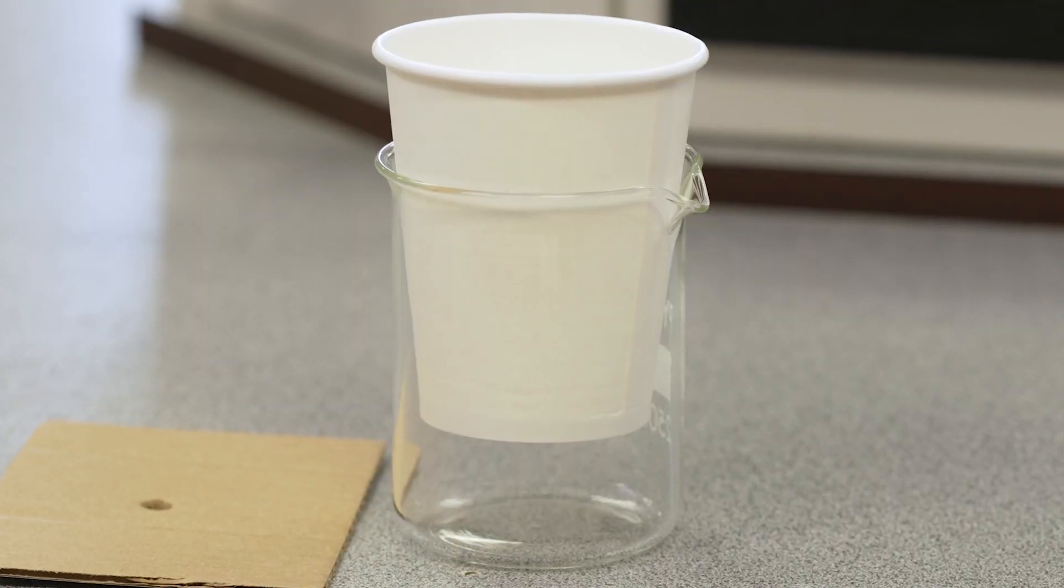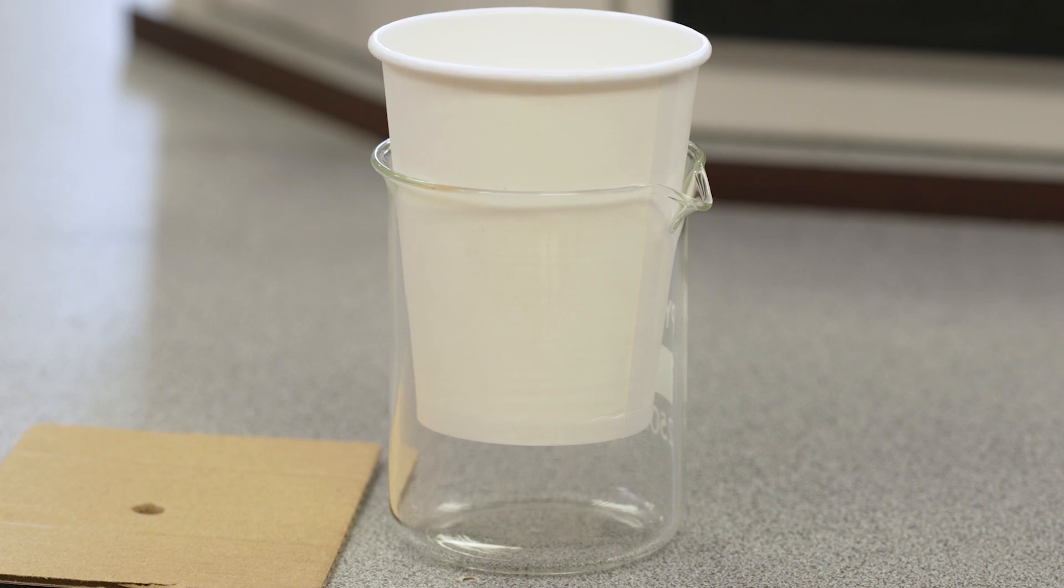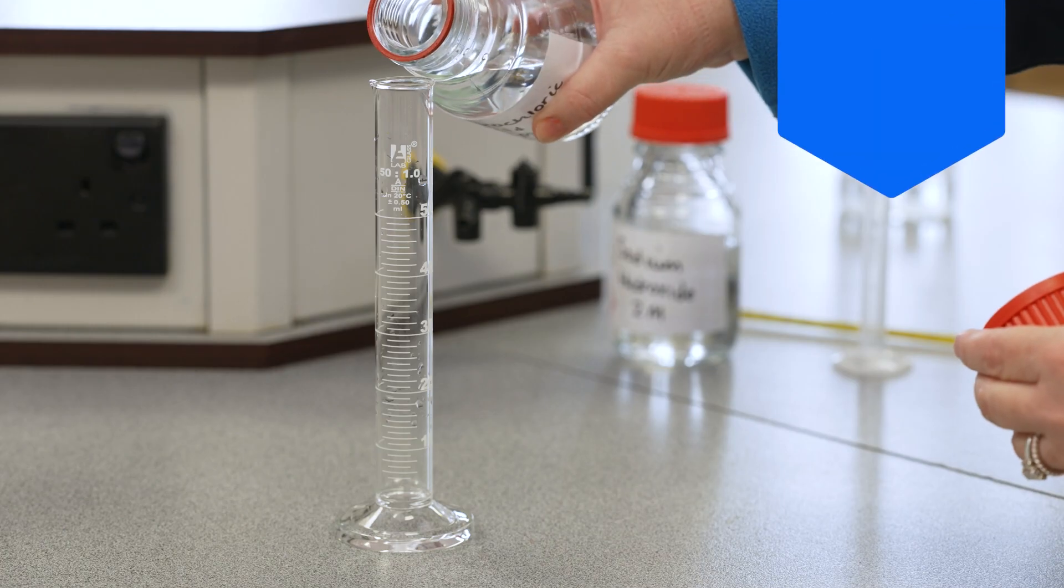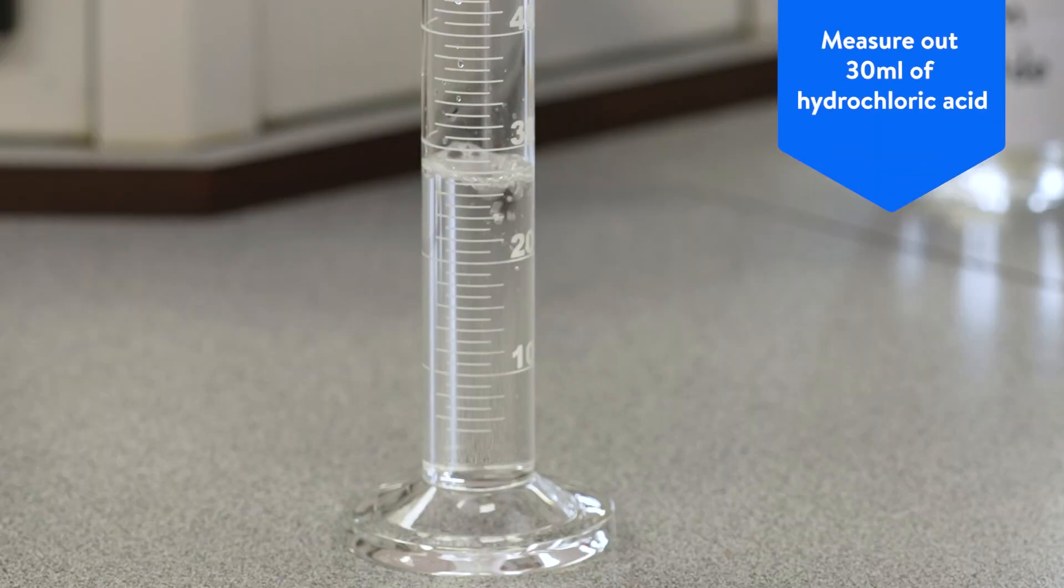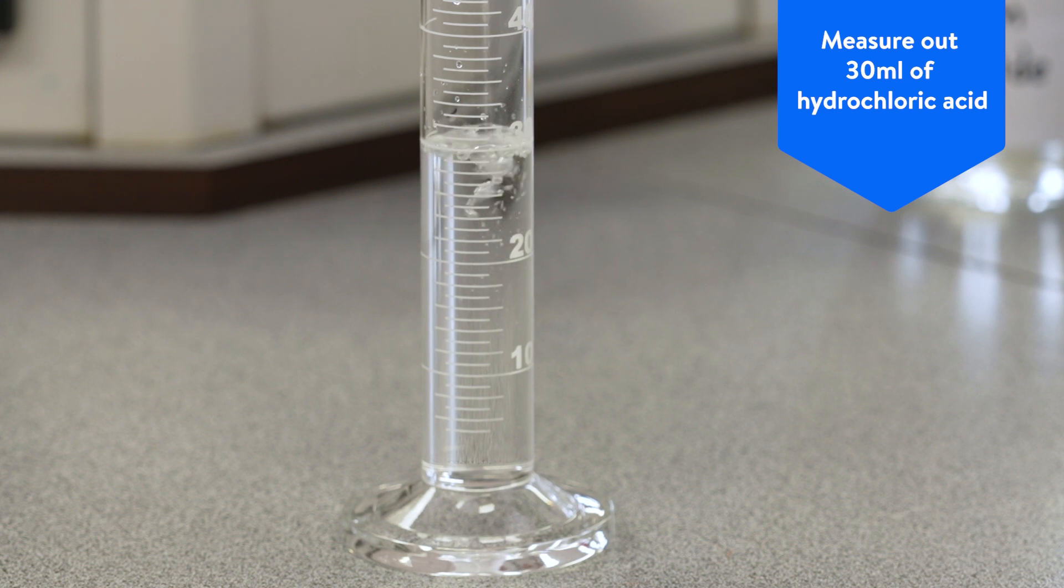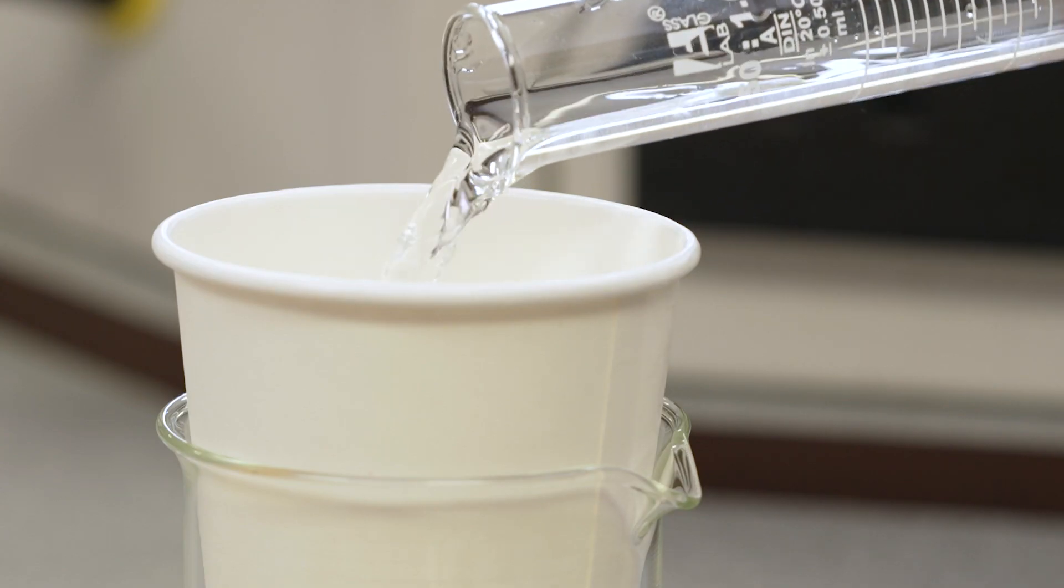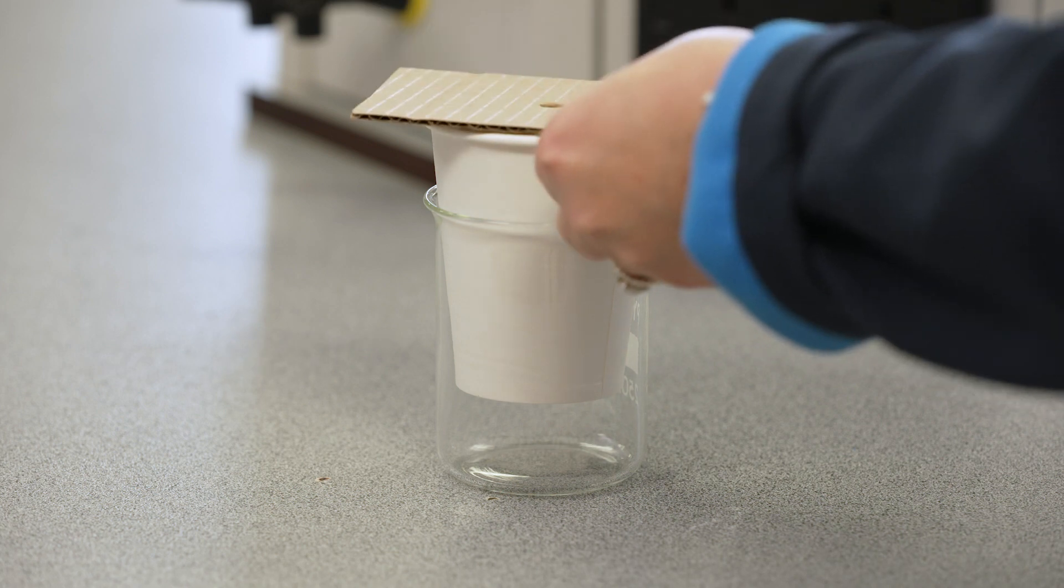Stand the insulated cup in the 250 milliliter beaker. Carefully measure 30 milliliters of hydrochloric acid into the measuring cylinder then pour into the insulated cup.